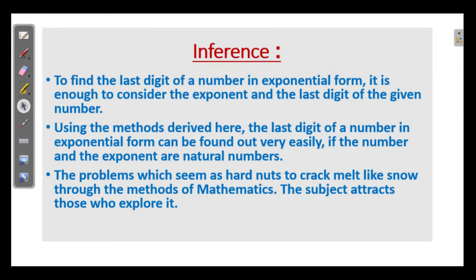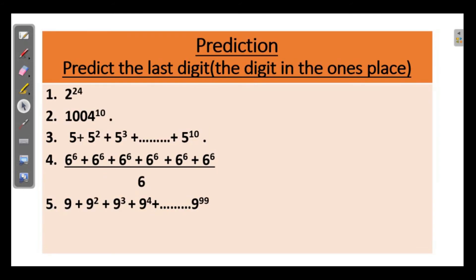So Rohit loves mathematics — just like you do, isn't it? Prediction: Predict the last digit for the digit in the 1's place. Five questions are given. Try to find the answers. Okay, thank you. Bye.